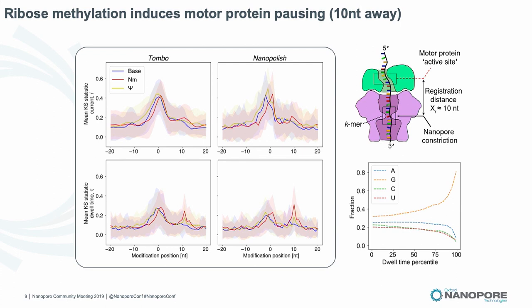We can detect certain types of modifications with dwell times alone. But a caveat: for completely unmodified in vitro transcribed RNAs, there are also dwell time-specific effects based on sequence alone. Ranking sequence content of a small trimer within the motor protein active site, the highest dwell time percentiles are enriched for G residues, suggesting steric effects or single-stranded stacking between purine residues increases dwell time as well.